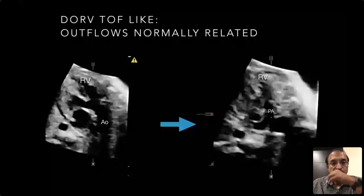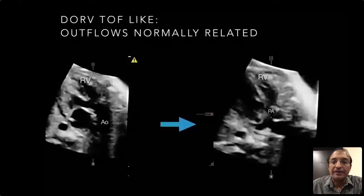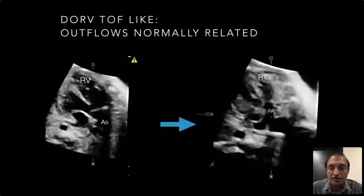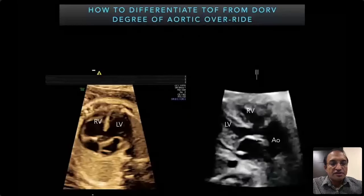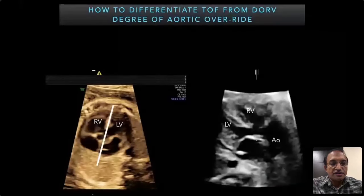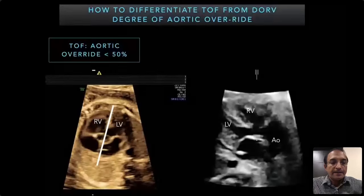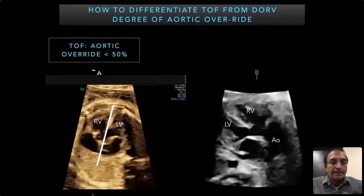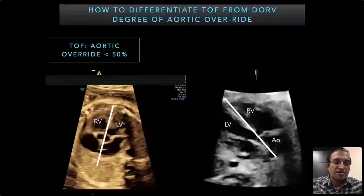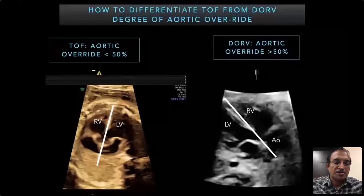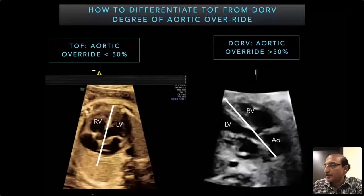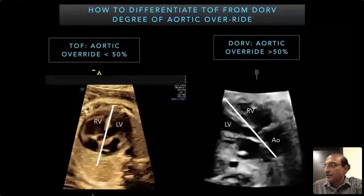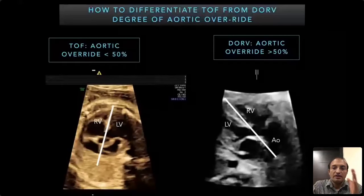How do you differentiate between double outlet right ventricle and tetralogy of Fallot? DORV has different types, but here we focus on the type where the great arteries are normally related, which looks very similar to tetralogy. One way to differentiate is to look at the degree of aortic override. In tetralogy, the aortic override is typically 50%. In DORV, the degree of override is much more — most of the aorta arises from the right ventricle. This is a simple and useful differentiating feature.